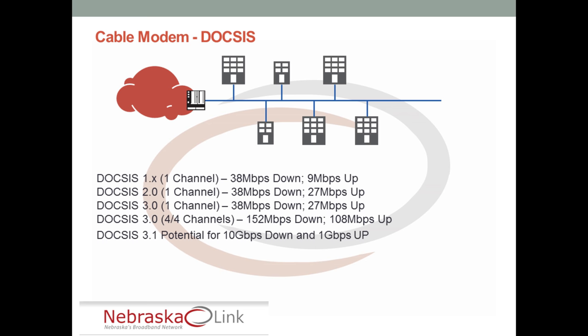The other thing to remember about cable modems versus some of the other technologies is it's a shared bandwidth technology. As the DOCSIS node is deployed, that 10 gigabits per second down and 1 gigabit per second up is shared by the subscribers in that segment of the network architecture. Still very effective for high bandwidth deployments depending on your usage — things like standard internet usage, home-based usage, or small business usage. But remember, it is shared bandwidth and it's asymmetric as well.